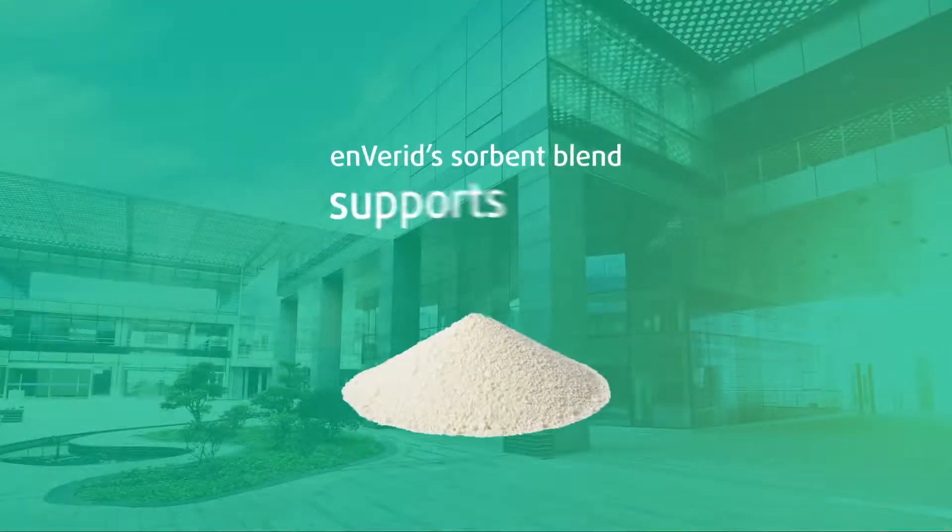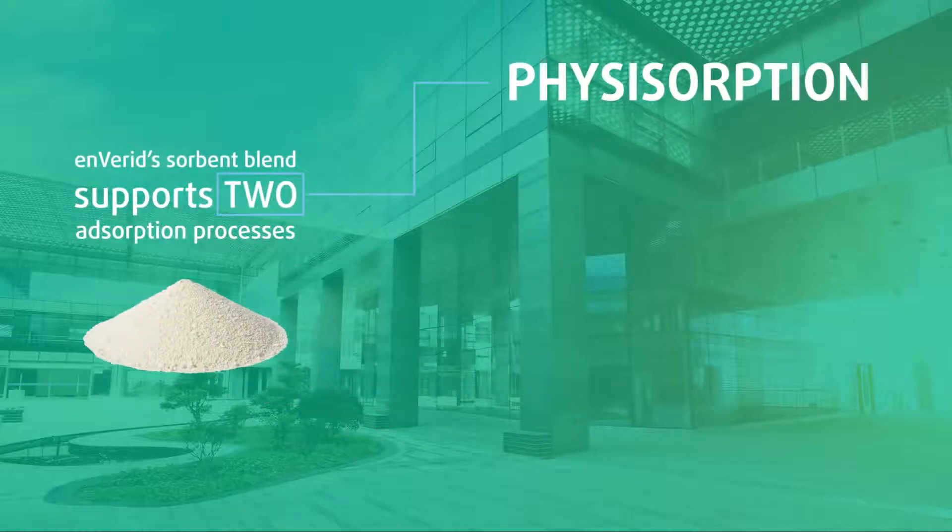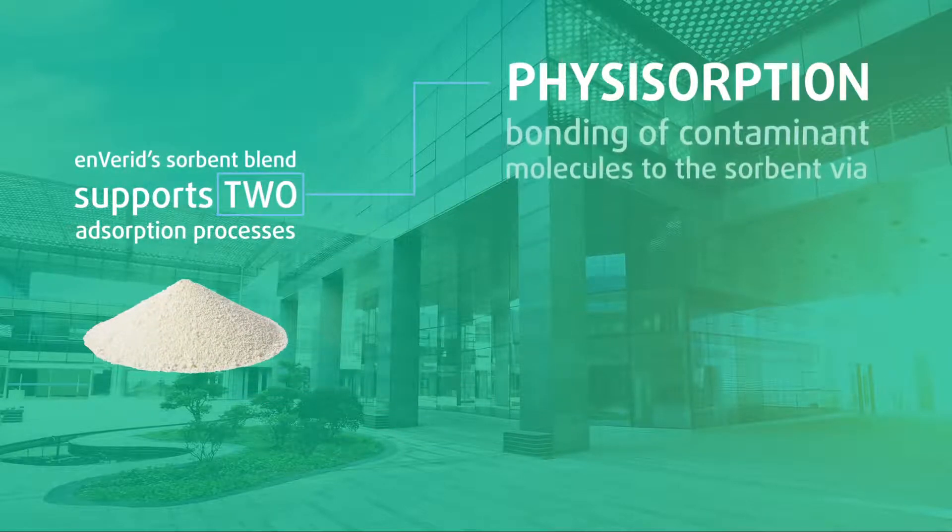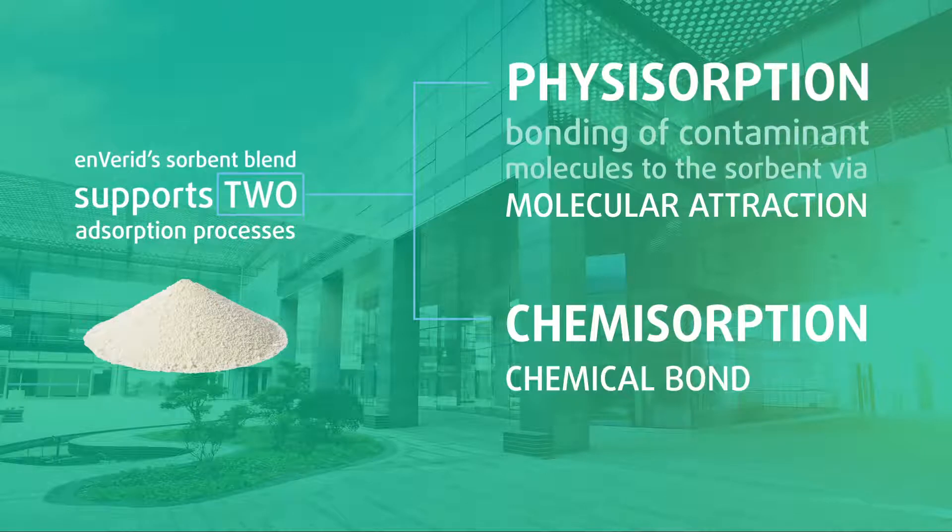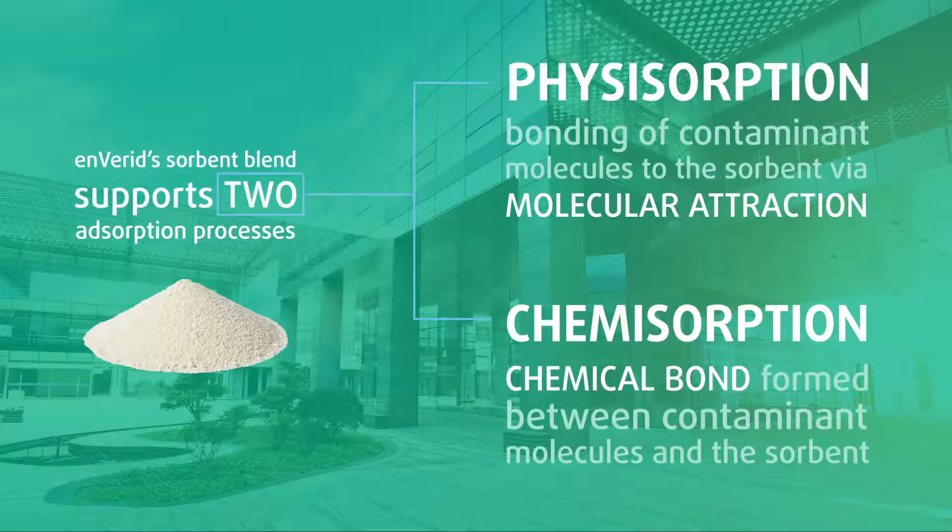Inverid's sorbent blend supports two adsorption processes: physisorption, when bonding of contaminant molecules to the sorbent occurs via molecular attraction, and chemisorption, when a chemical bond is formed between the contaminant molecules and the sorbent.